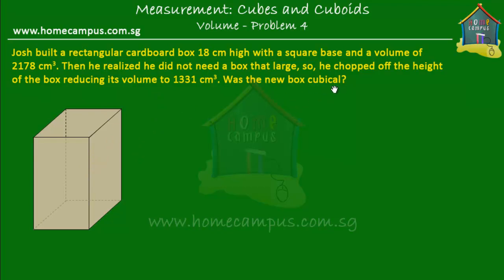What's meant by cubical? Well, a cubical box is a cube, which means that its length, breadth, and height should all be the same — they should all be equal. So we have to find out if that's the case.